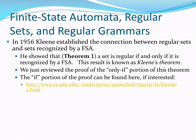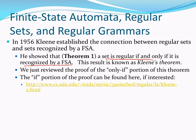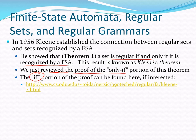Again, in 1956, Kleene established that a set is regular if and only if it is recognized by an FSA. Earlier in the chapter, we reviewed a proof of the only if portion of this theorem. If you want to check out a proof of the if portion of the theorem, you can follow that link.